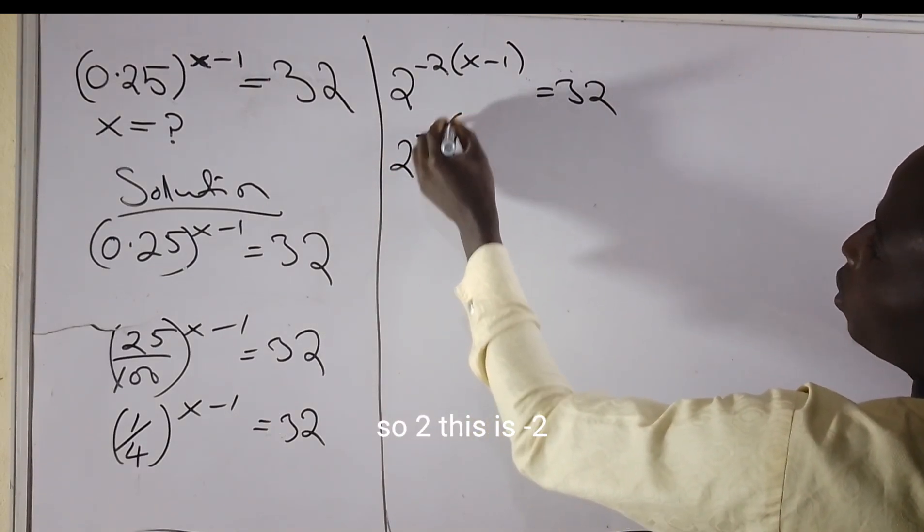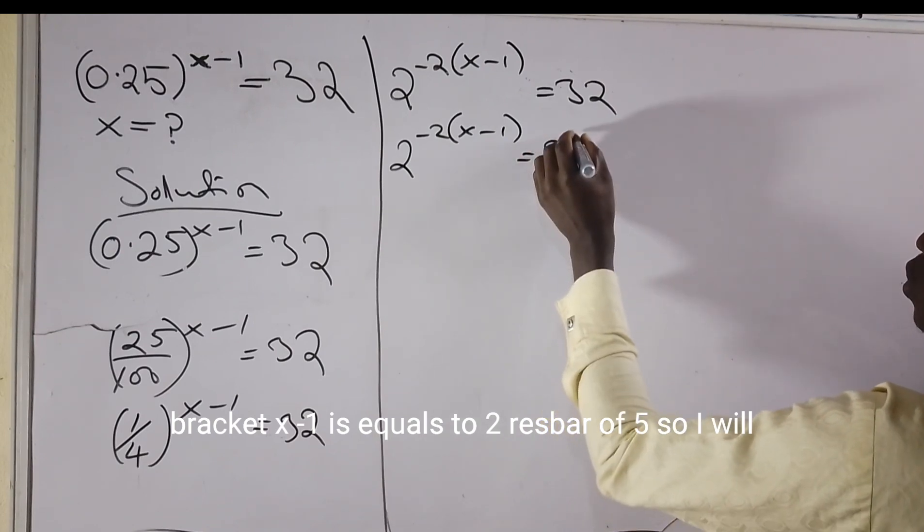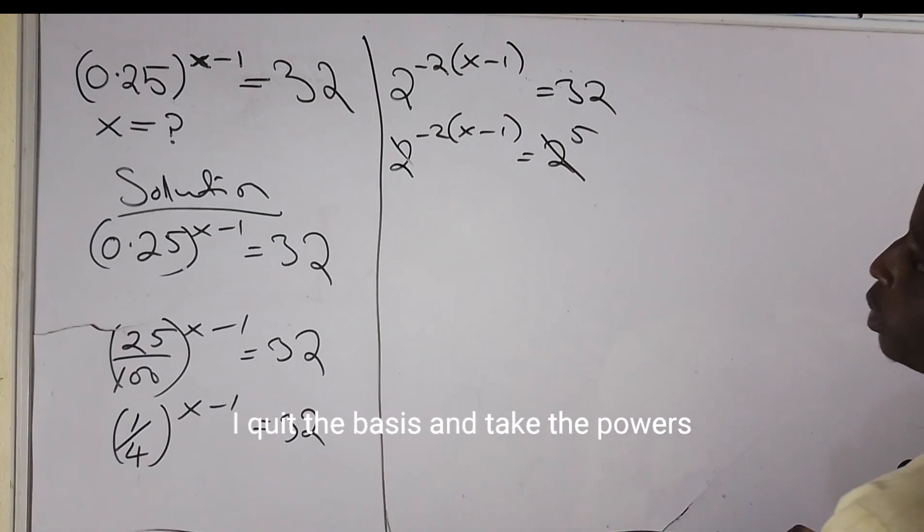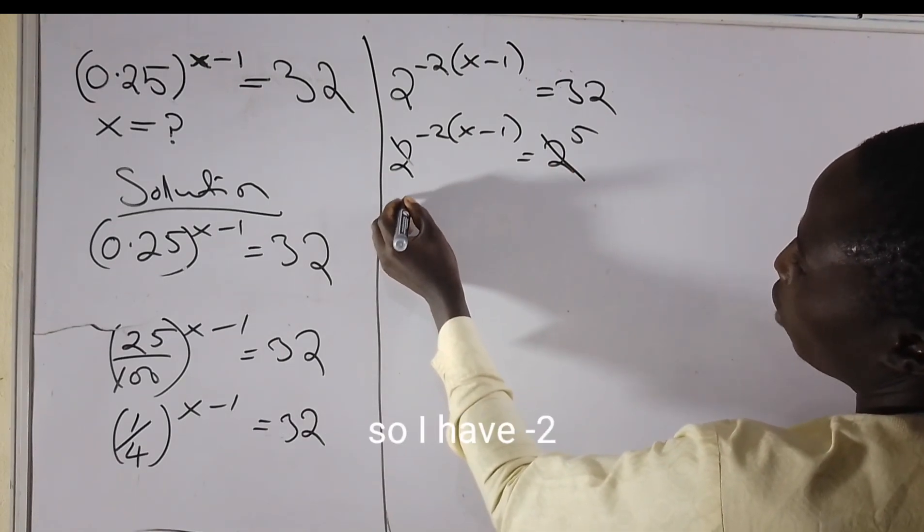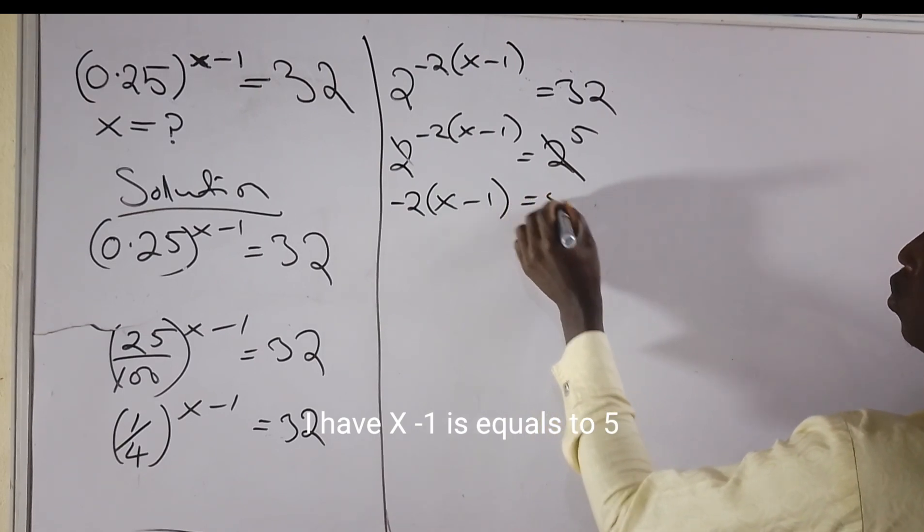So 2 to the minus 2 bracket x minus 1 equals 2 raised to the power of 5. I will equate the bases and take the powers, so I have minus 2 times x minus 1 equals 5.